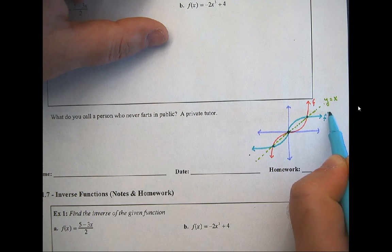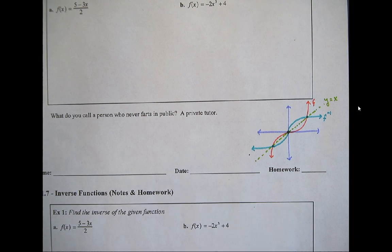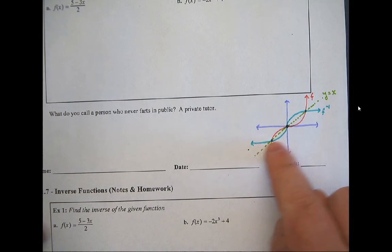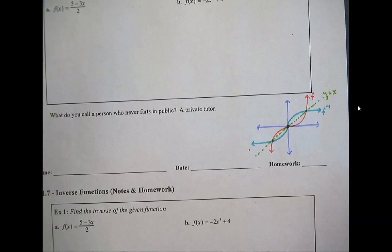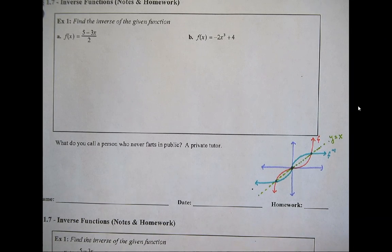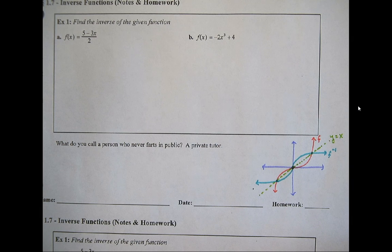This is what we would call f to the negative 1, which is f inverse. These two functions undo each other. So this is the cube function. This function is the cube root function. They undo each other. So the idea is pretty simple. The actual practice of it can be a little bit complicated.